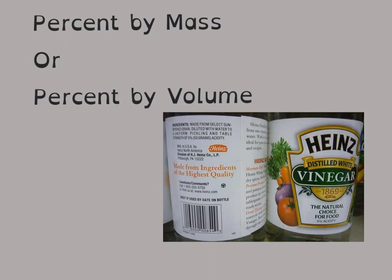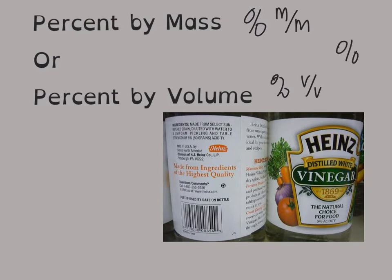One of the units we're going to look at in this chapter is percent by mass and percent by volume. They will often show it as percent M over M, because they're telling you it's a mass over mass, or percent V over V, or sometimes they'll just say percent.